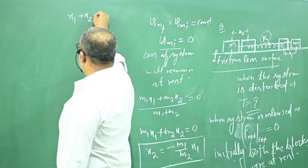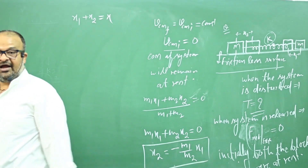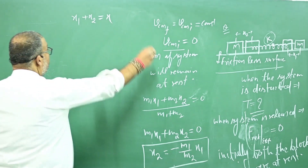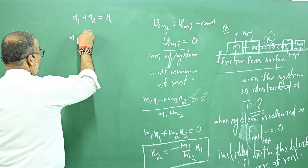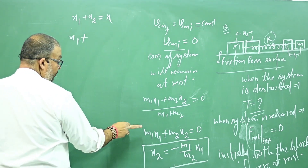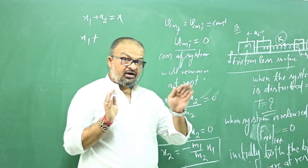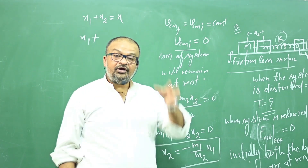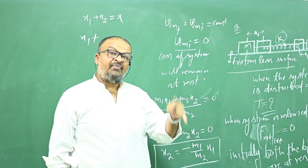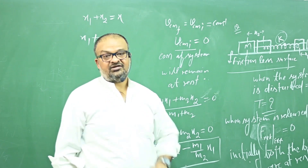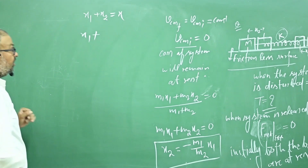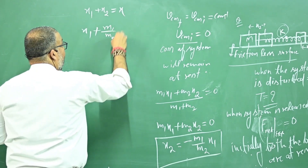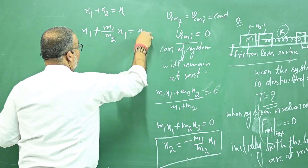Also, x1 + x2 equals the total displacement x. Here x1 is in one direction and x2 is in the other direction, so their magnitudes sum to x. Substituting x2 = (M1/M2)·x1, we get: (M1/M2 + 1)·x1 = x, which gives x1 = M2/(M1 + M2) · x.